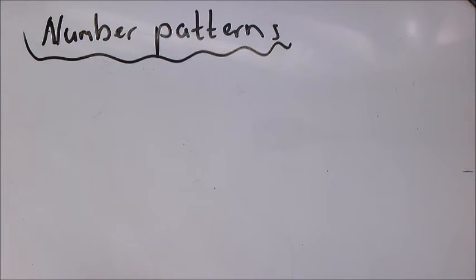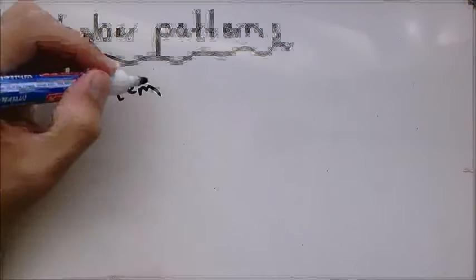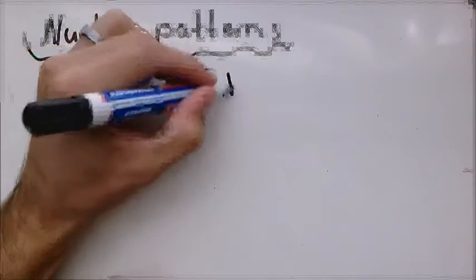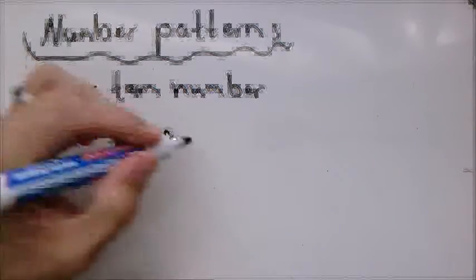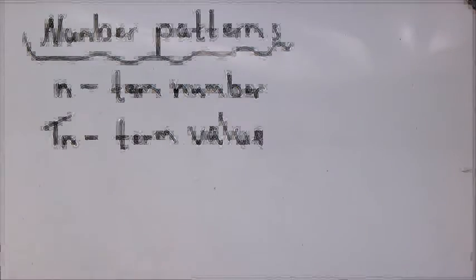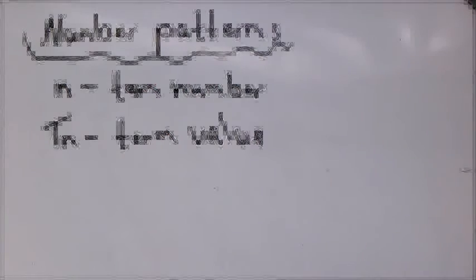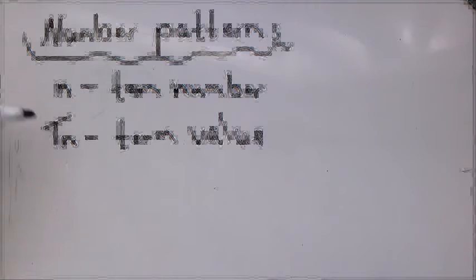First of all, the term number is known by n, and the term value is known by T subscript n. So if I say the seventh term, n is 7. If I say the seventh term equals 22, then Tn is 22.